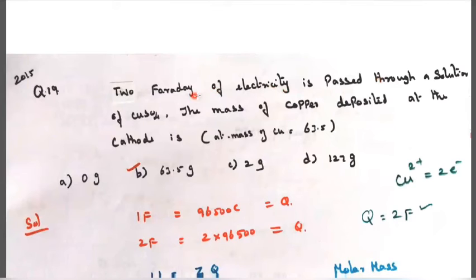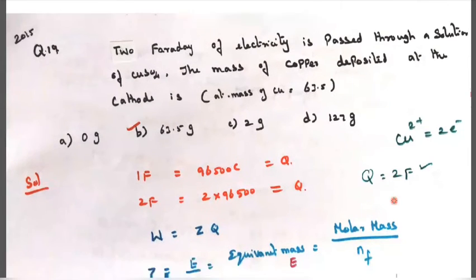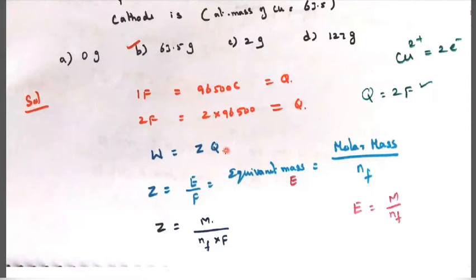2015, two Faraday of electricity is passed through a solution of copper sulphate. The mass of copper deposited at the cathode is - the atomic mass of copper is 63.5. One Faraday means 96,500 coulombs, and two Faraday means two into 96,500 coulombs. One Faraday means one electron involved, two Faraday means two electrons, three Faraday means three electrons. Copper two plus copper sulfate gives two electrons. Q is equal to two Faraday. W is equal to ZQ.